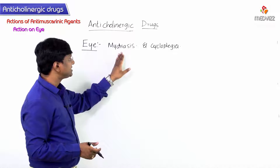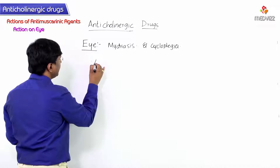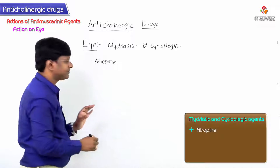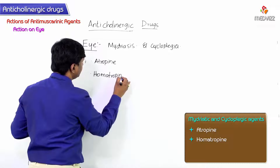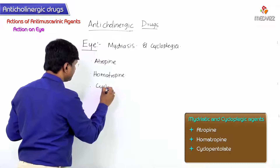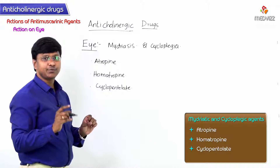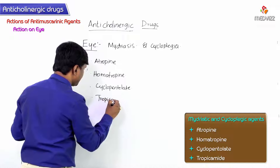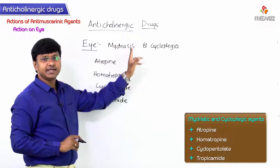The drugs used as mydriatics and cycloplegics — that is, drugs which will cause mydriasis as well as cycloplegia — include atropine, homatropine, cyclopentolate, and tropicamide. These are the drugs which will cause mydriasis and cycloplegia, which is loss of accommodation.